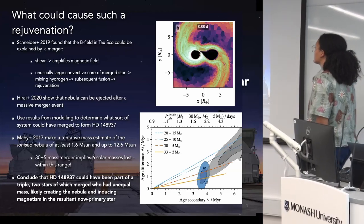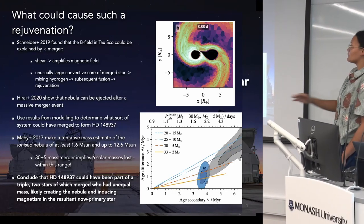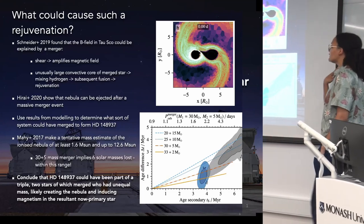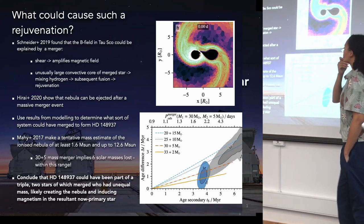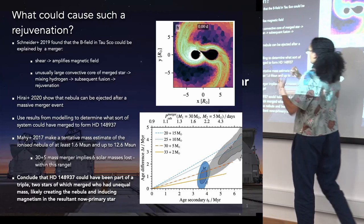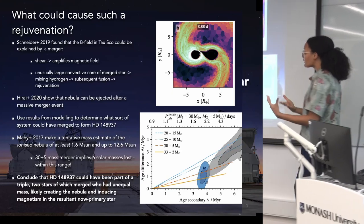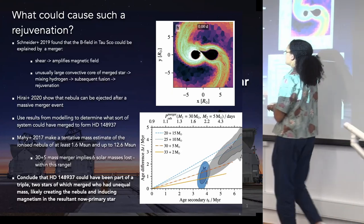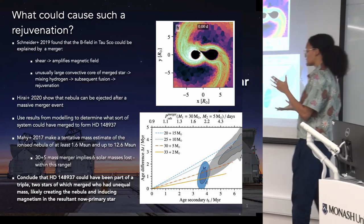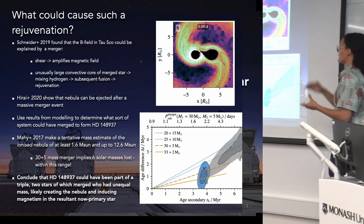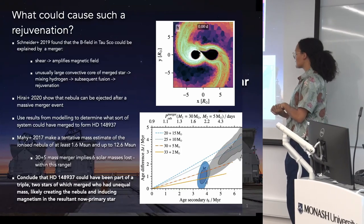We decided to look at whether a stellar merger could explain not only the generation of the magnetic star, but also the rejuvenation that we're seeing. Some work by Fabian Schneider a couple of years ago showed that a magnetic field could be generated in a stellar merger — the shear of the two cores amplifies magnetic fields, and the subsequent mixing of material in the merged star leads to fusion which makes it look younger. And of course, work by others showed that you can have a huge ejection event associated with massive stellar mergers. Because we already had this big nebula for HG 148937, we thought perhaps this system has also formed from such a merger, and we got in contact with Fabian to see whether this was possible.